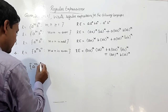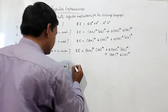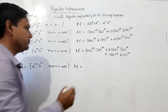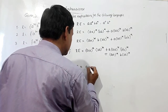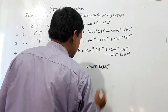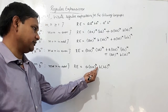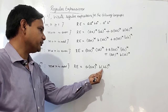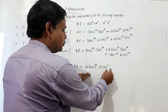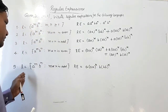For the language where m times n is odd: we have seen all the cases. M times n is odd only when both m and n are odd. So I will use a(aa)* concatenated with b(bb)*. For example, taking a(aa)* gives a-cubed and b(bb)* gives b-cubed, so three times three equals nine, which is odd. Or three times five equals fifteen, also odd. So this is the regular expression for L = a^m b^n where m times n is odd.